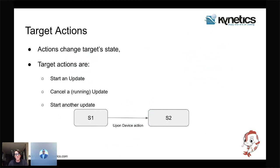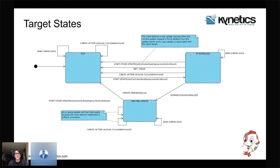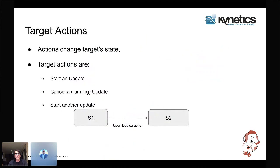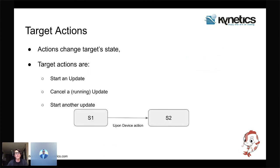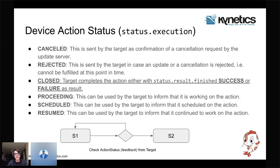Actions can trigger state changes through execution status reporting. The device informs the server of the execution status of an action. For example, if an action is to start an update but the update is rejected, the target informs the server and the execution status causes the state to revert to the previous one.